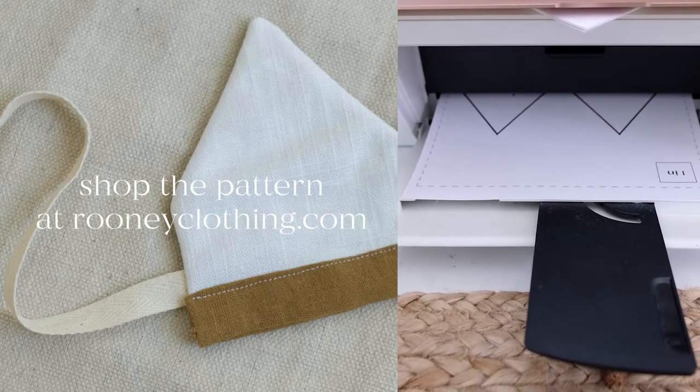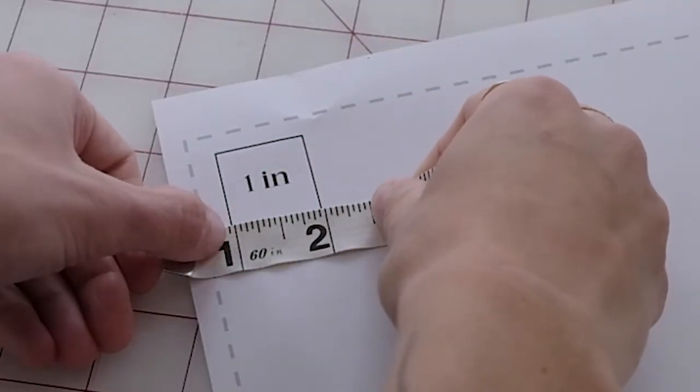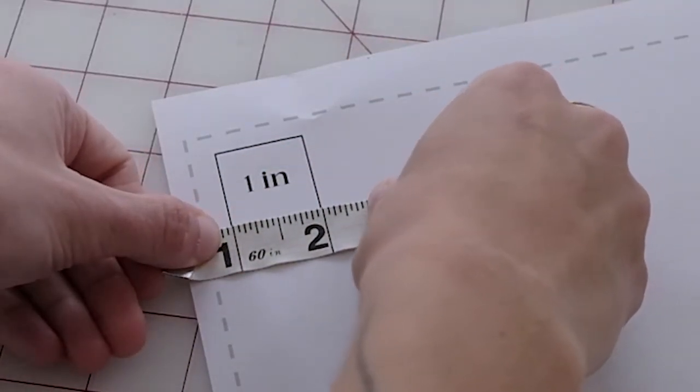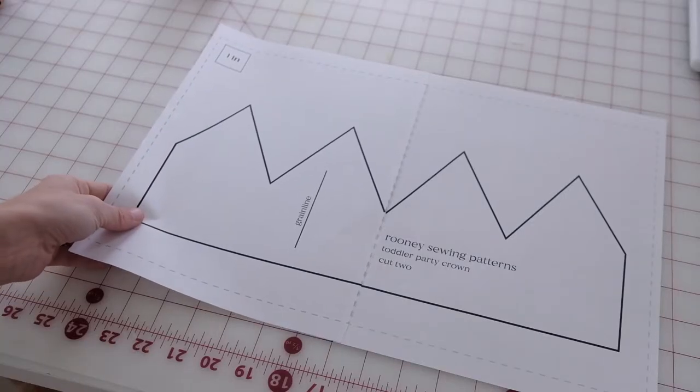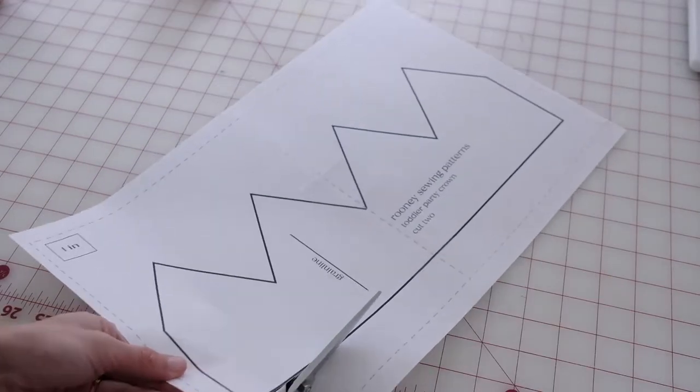First, print out your pattern and make sure it is printed to scale by measuring the one-inch box. You'll line up your pattern pieces and tape them together, and then cut out the large shape.